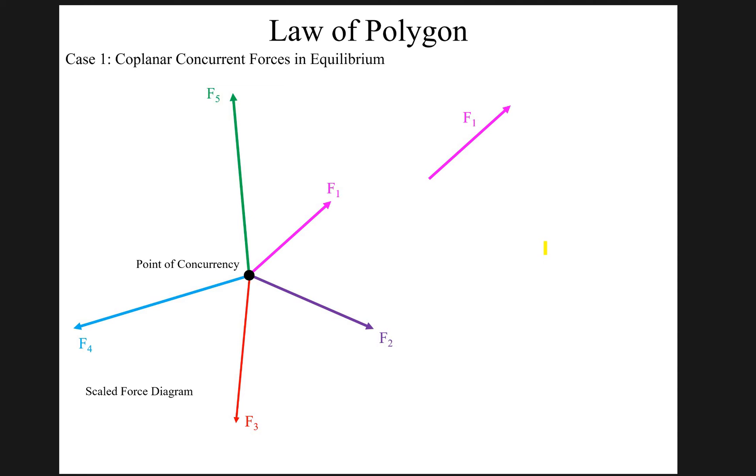This is case number one. Case number one says that if the coplanar concurrent force system is in equilibrium, then what will be the scenario? This is the diagram of the scaled force system, and it's also telling you about the point of concurrency, the common point from which all the forces are passing: F1, F2, F3, F4, and F5. These are the five forces which are passing through one common point.